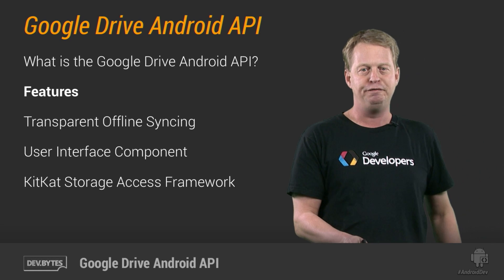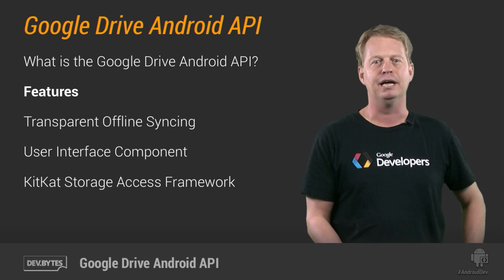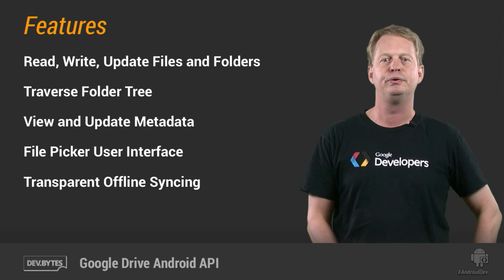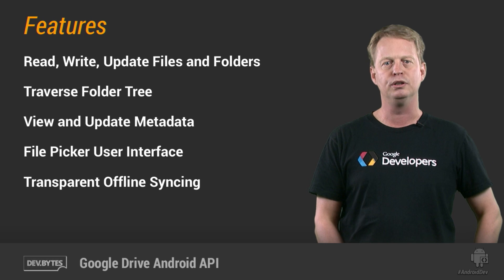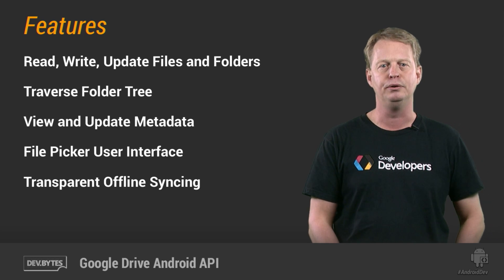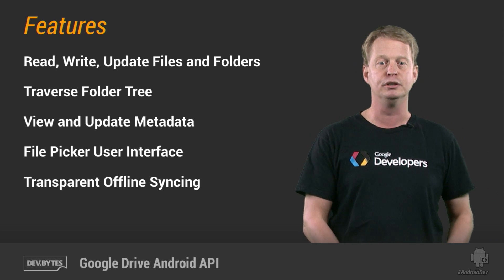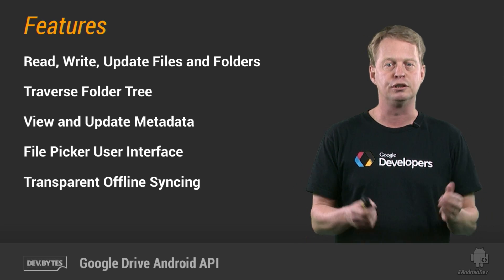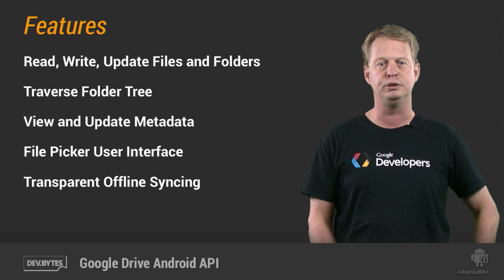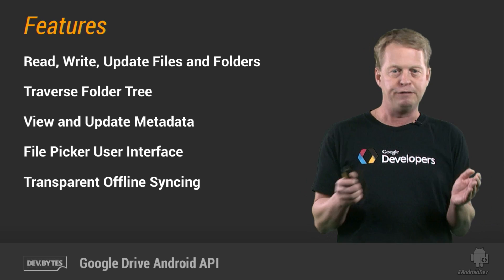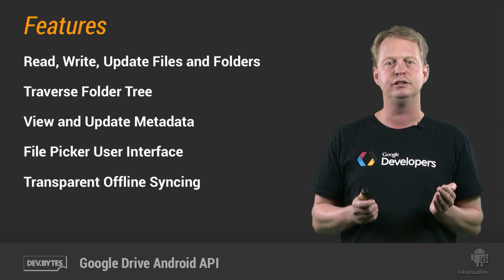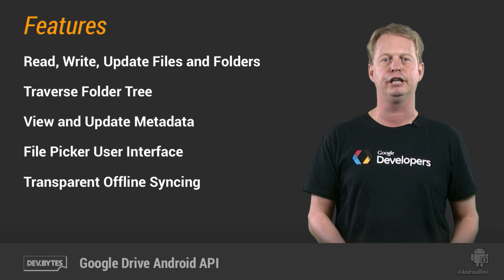And that brings us over to the features of the API. Pretty much everything you need to do to create a great Google Drive app is included in the API. You can read, write, update files and folders, traverse folder trees, view and update metadata. There is a file picker user interface, and you have transparent offline syncing.